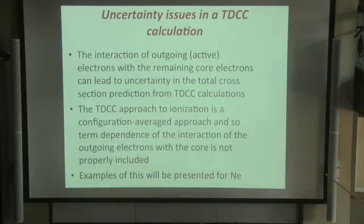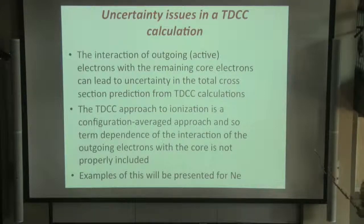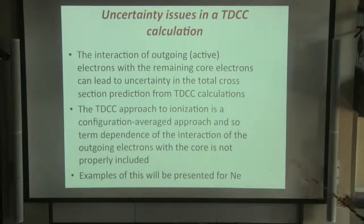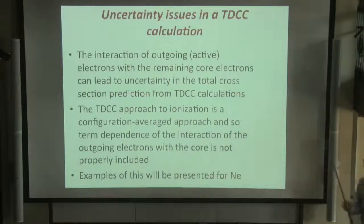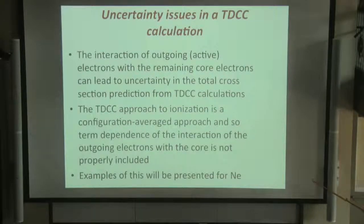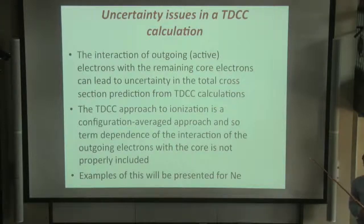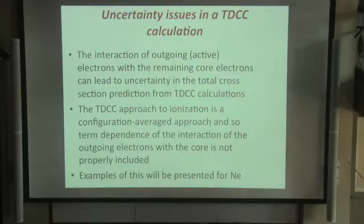There are other, more physics-based issues. For systems with complicated structure, the interaction of the two active electrons with the remaining core electrons can lead to uncertainty in the total cross-section. This is because the time-dependent approach is a configuration-average approach at its heart, meaning the term dependence of the core interaction with the outgoing electrons is not properly included. This can make a significant difference for systems where the final core is not spherical and has a lot of term dependence — something like neon, which we'll talk about shortly.